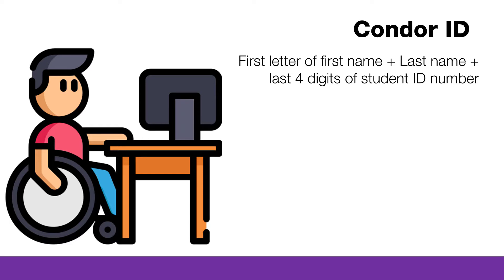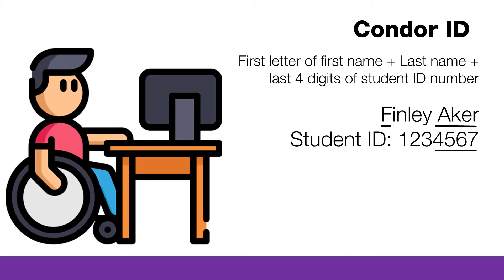Your Condor ID is made up of your first initial, last name, and last four digits of your student ID number. You can find it in the top right corner of your student enrollment form. For example, this student's name is Finley Acker. Their student ID number is 1234567, so their Condor ID will be FAcker4567.